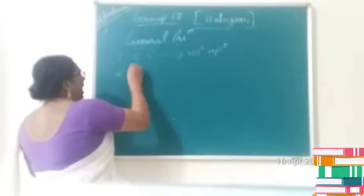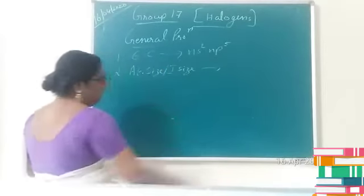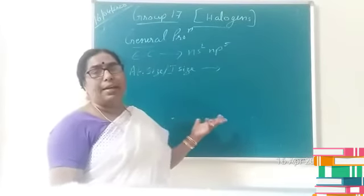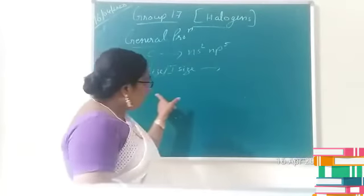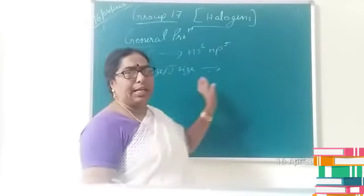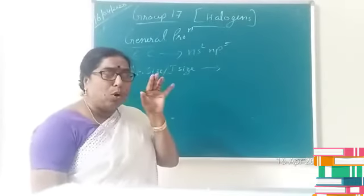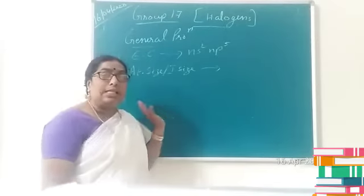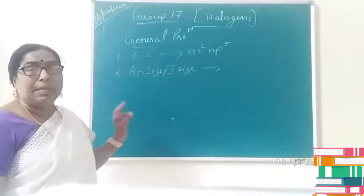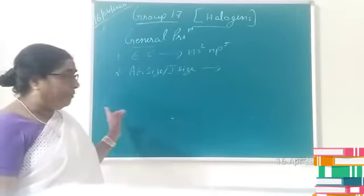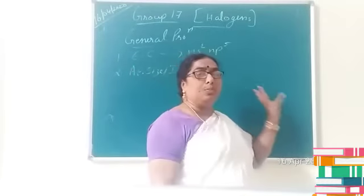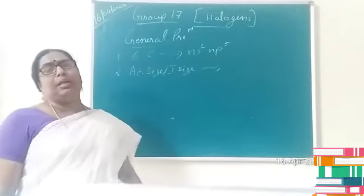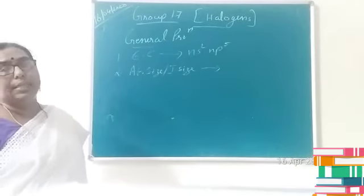Now let us consider atomic size or ionic size. As you move down the group, the number of shells increases, so the size of the atom increases. However, in each period, Group 17 elements are on the extreme right-hand side, making them the smallest atoms in every period due to maximum effective nuclear charge. As we come down the group, the number of shells increases, so atomic or ionic size increases.